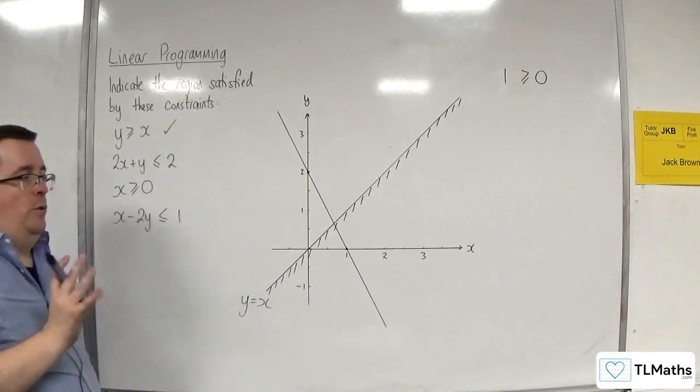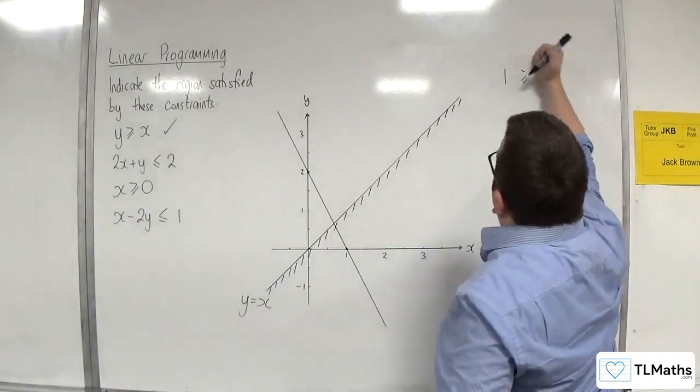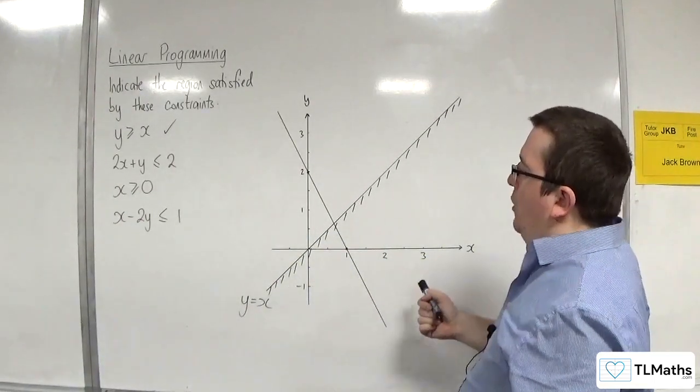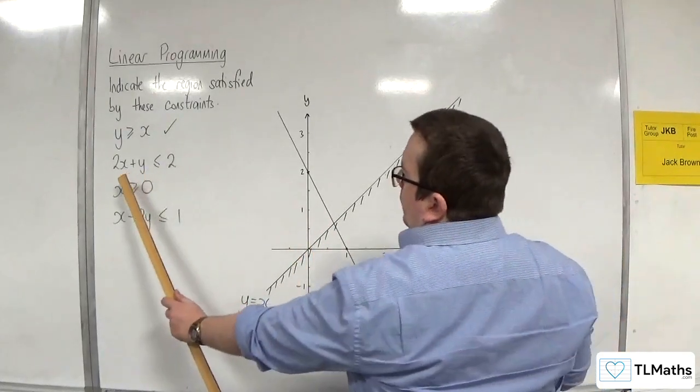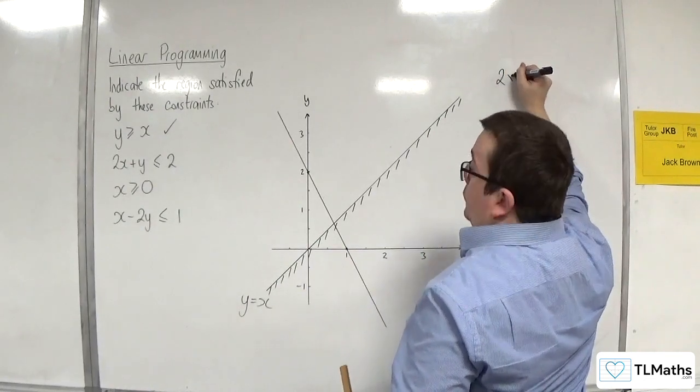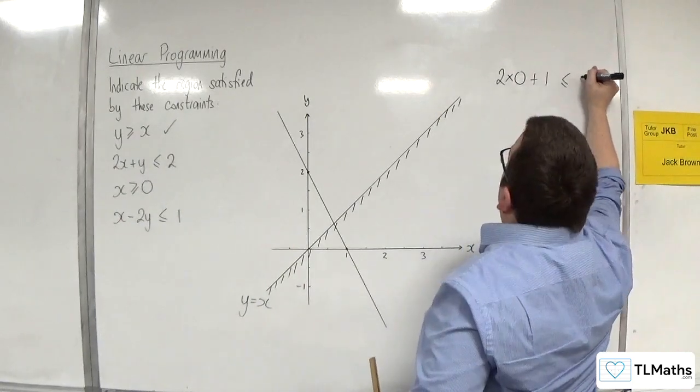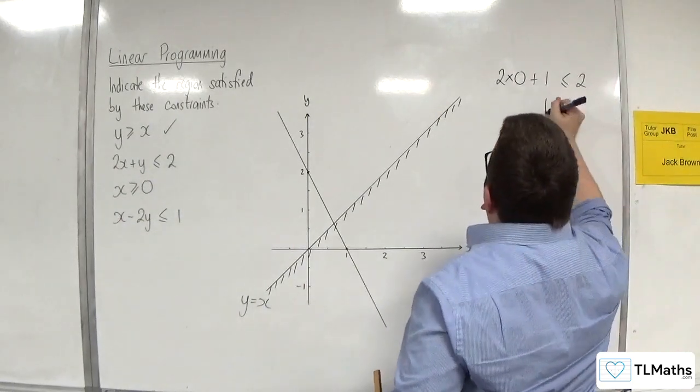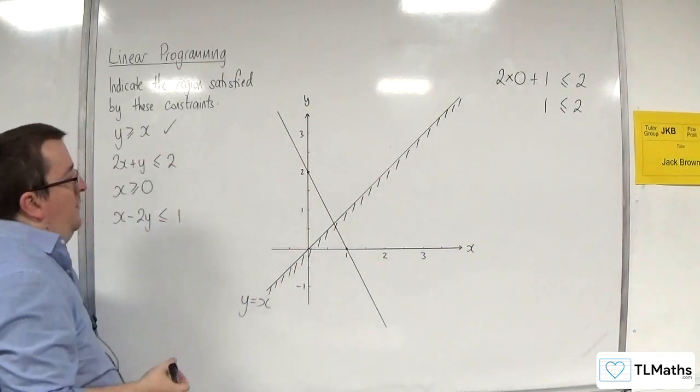And next job is to tell you which region should I shade. So let's choose a point that's not on the line. Let's go with 0, 1 again. So 2 lots of 0 plus 1. Is that less than or equal to 2? Well, we have 1 is less than or equal to 2. Well, that's correct. That's right.